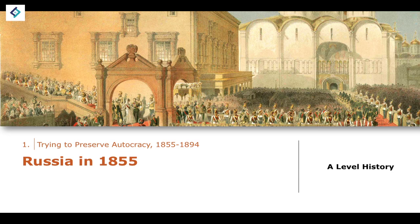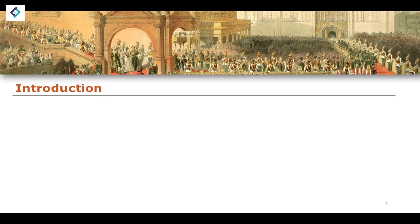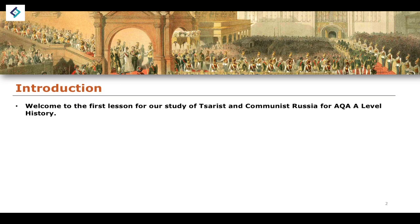What we're going to do in this lesson specifically is take a look at the background to the state of Russia in 1855. We'll talk a little bit about the history of Russia, the geographical understanding of the Russian state, and then we will talk about Alexander II and the first of the major issues we're going to cover, which is the emancipation of serfdom. That is essentially the agenda for this lesson.